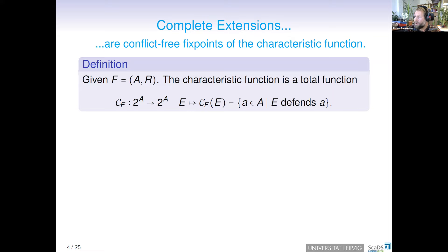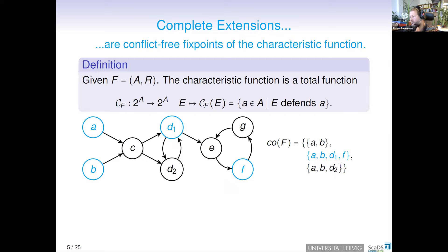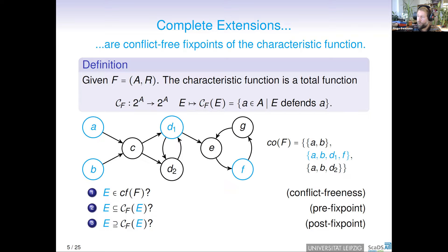Let's check here in the example for A, B, D1, F that it is a complete extension. This means we have to check conflict-freeness, that it is a pre-fixpoint, as well as a post-fixpoint. Conflict-freeness is clear. There are no attacks between A and B, A and D1, and so on. This is very simple to check.